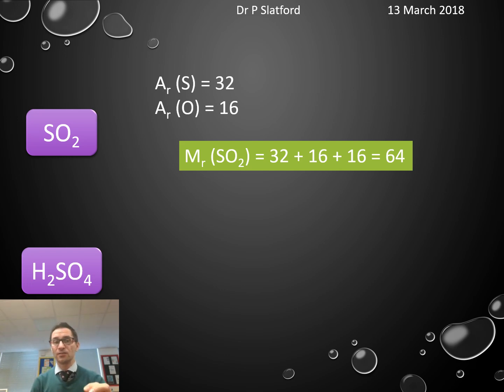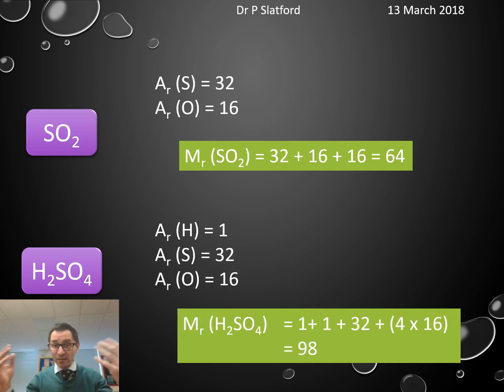Sulfuric acid, H2SO4. There are two hydrogens, one sulfur, four oxygens. Hydrogen is 1, sulfur is 32, oxygen is 16. Add them all up and there's 1 plus 1 plus 32 plus 4 lots of 16 is 98.